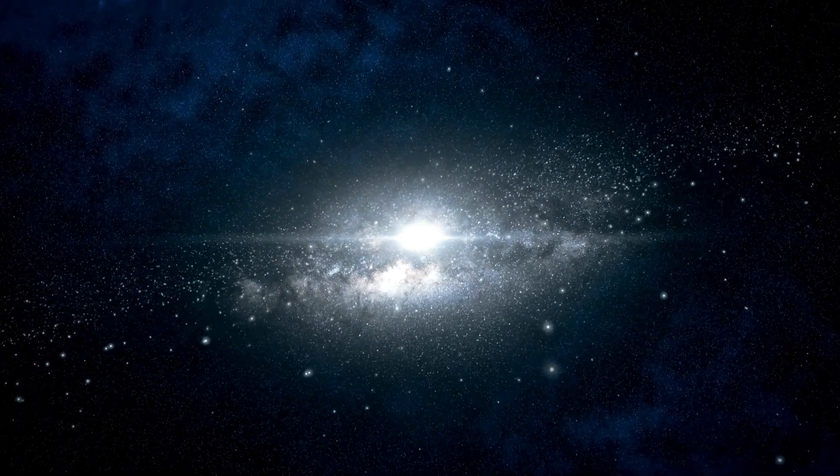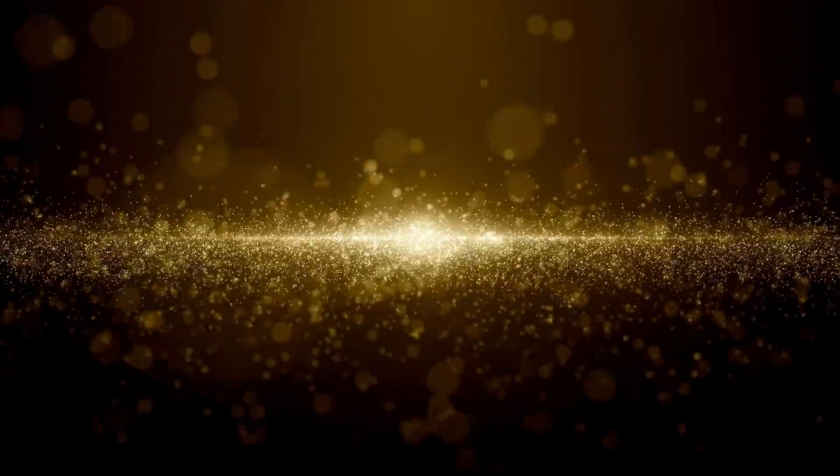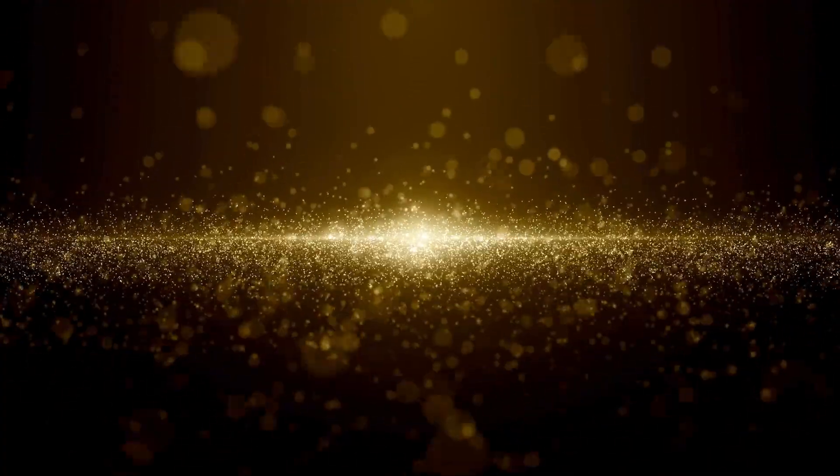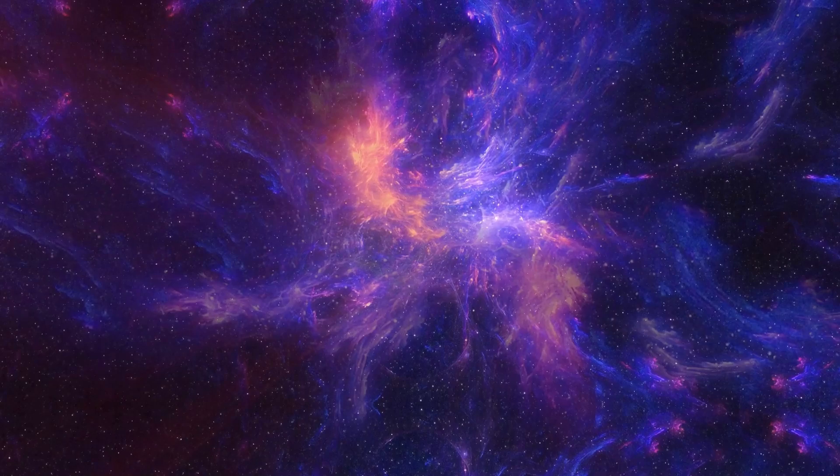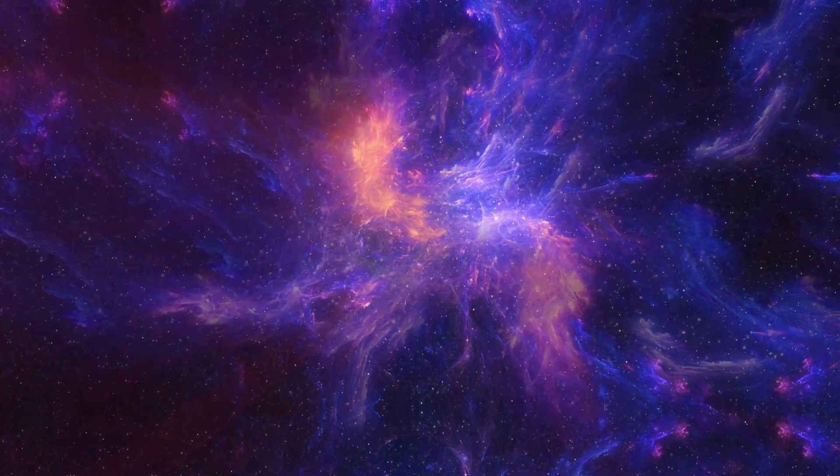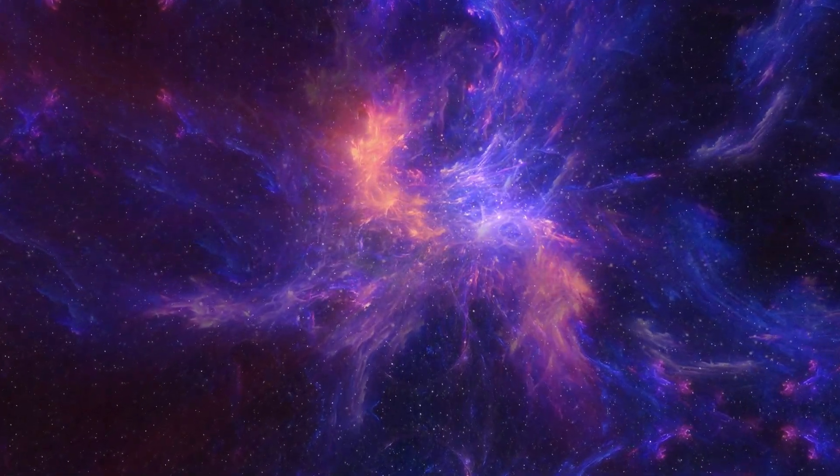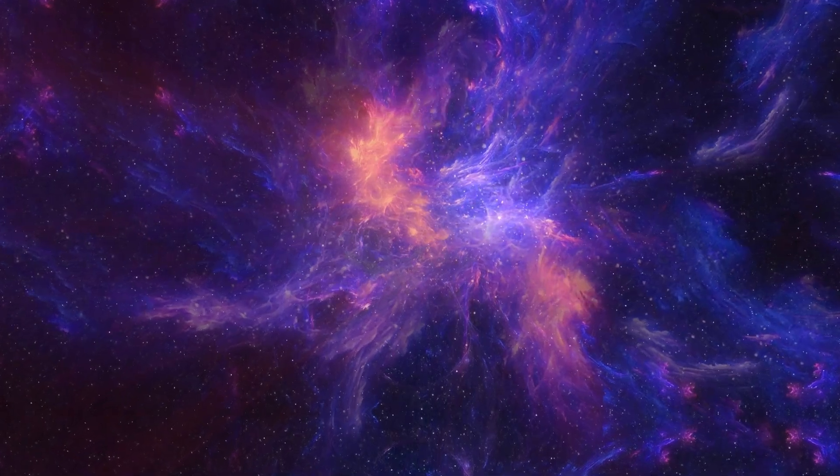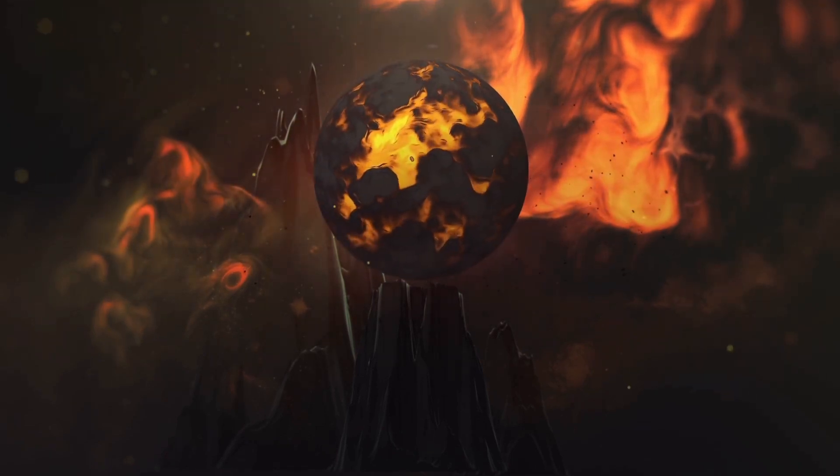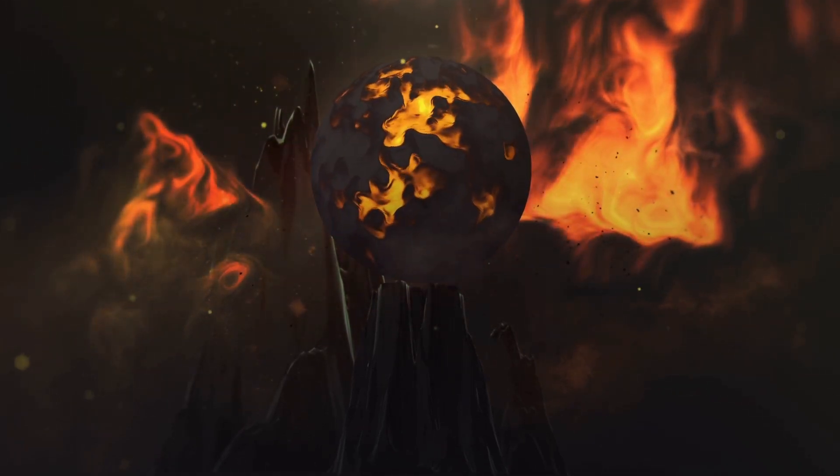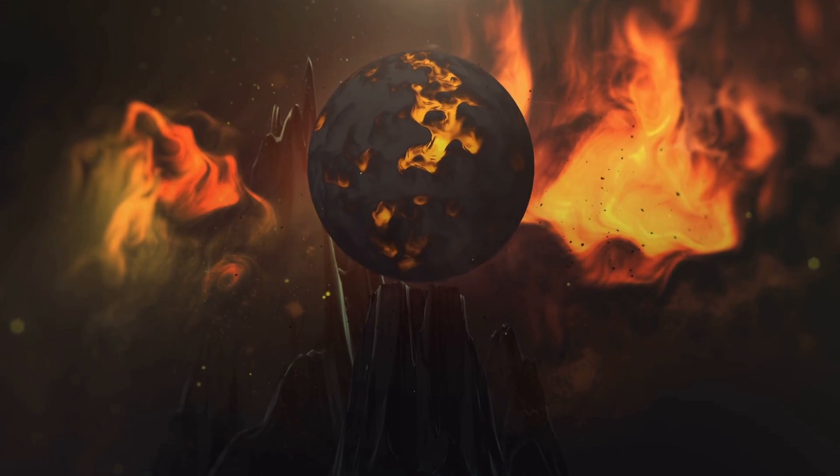Betelgeuse, a massive star in its late stages of life, is of immense size. Its dimensions are so vast that if it were positioned at the center of our solar system, it would extend as far as Jupiter's orbit. Eventually, this star will undergo a collapse resulting in a powerful supernova explosion, which may lead to the formation of either a neutron star or a black hole.